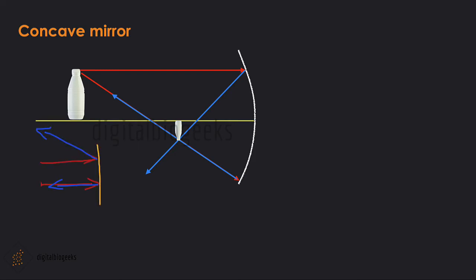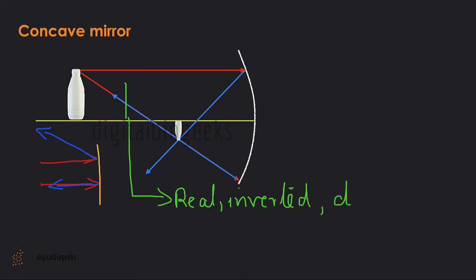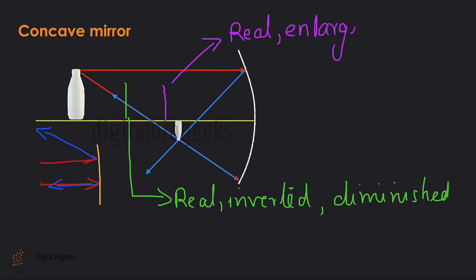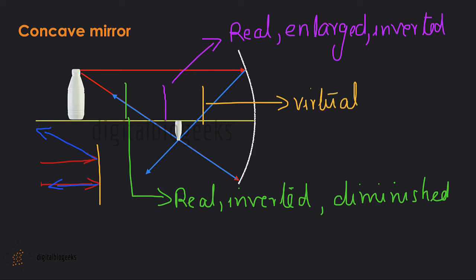If the object is moved far from the mirror, the image formed will be real, inverted, and diminished. If the object moves closer to the mirror, the image will be real, enlarged, and inverted. But if the object comes still closer, the image formed will be virtual, erect, and enlarged.